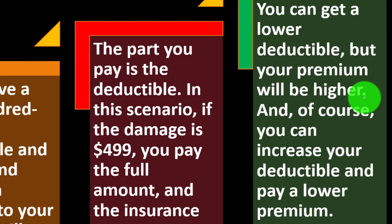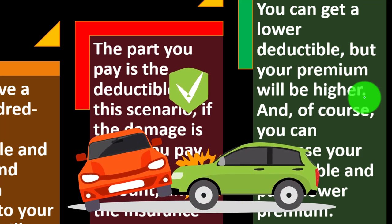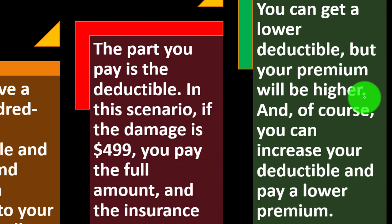If you want to tinker with this: a high deductible means you pay more out of pocket when there's damage to your car, and anything over and above that is paid by the insurance company. The higher the deductible, the more you pick up, which means lower premiums — the cost of the insurance. You can increase your deductible and pay a lower premium.